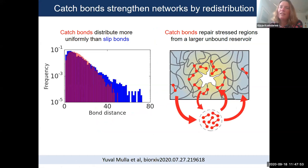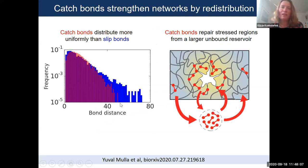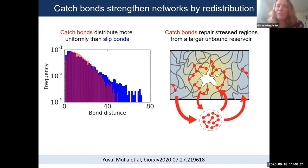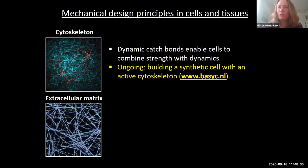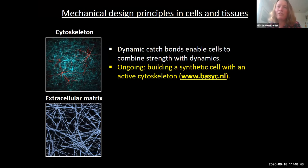If we repeat simulations with cross-linkers fixed to one location — only able to rebind in the same spot — the catch bonds lose their advantage and make networks that are actually weaker than slip bond networks. The picture is that catch bonds give their advantage from the ability to redistribute. In simulations, measuring distances between adjacent bonds, the catch bond distribution is more narrow than for slip bonds — slip bonds leave stressed regions with larger gaps, making those networks more vulnerable to fracture. In summary, this connects molecular-scale dynamics to macroscopic mechanics: dynamic catch bonds are a way for cells to combine strength with dynamics.